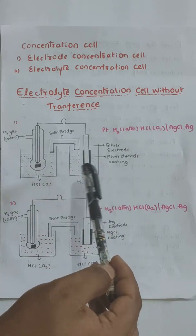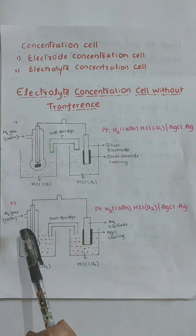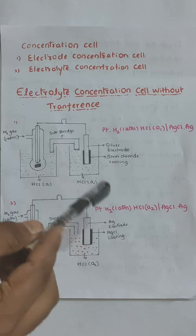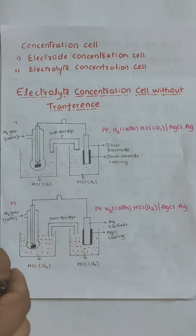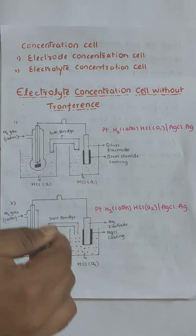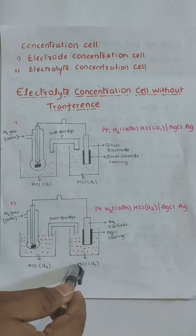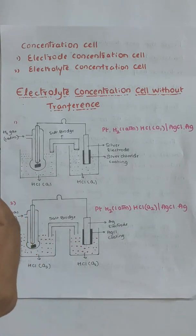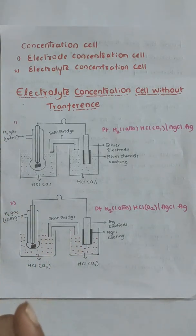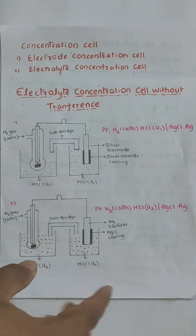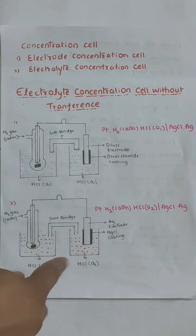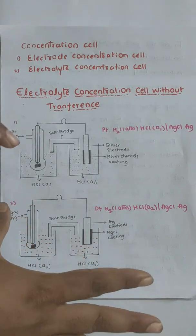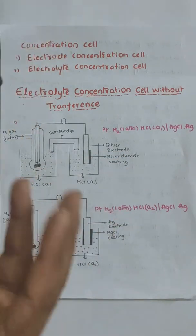Before dealing with the cell reactions, we can represent the second diagram. The second diagram is the same as the first diagram, but the only difference is that we are taking a different concentration. The solution and electrolyte are the same — the only change is the concentration of the electrolyte.